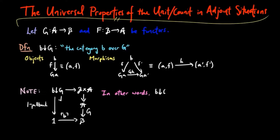In other words, B over G is the fiber category of the following functor over B.